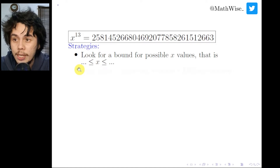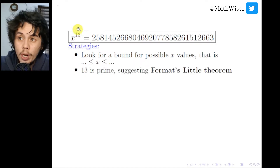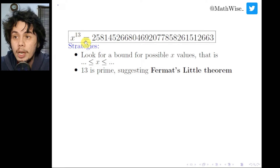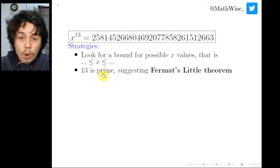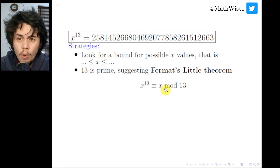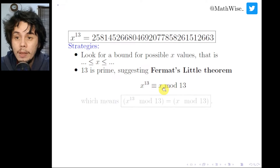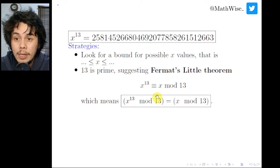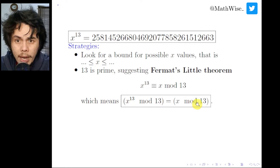The second strategy uses the fact that the exponent 13 is a prime number, which means we can apply Fermat's Little Theorem: x^13 is congruent to x modulo 13. This means the remainder when x^13 is divided by 13 is the same as the remainder when x is divided by 13.